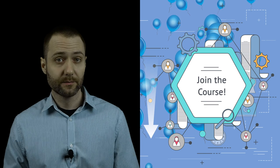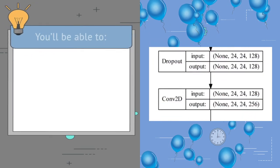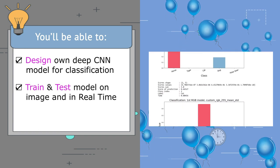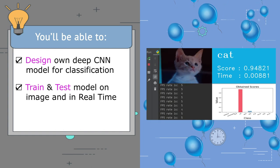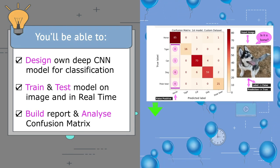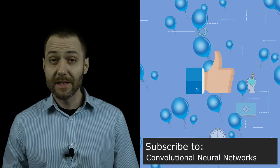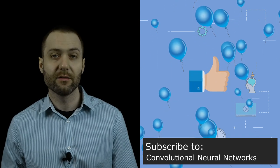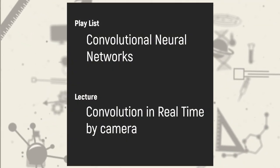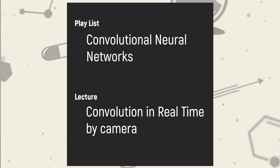Do you want to train a Deep CNN model? Then join the course — find the link below this video. You will be able to design your own Deep CNN model for classification tasks, train and test it on images and in real time by camera, build your own classification report, and analyze the confusion matrix. Click the link below to start now. Thank you very much for watching! Please like this video and subscribe to the channel if you haven't already. See you soon in the next lectures!